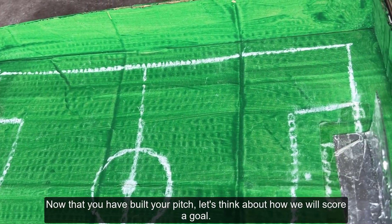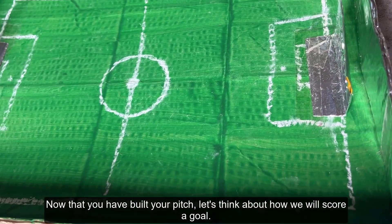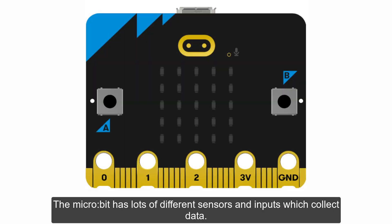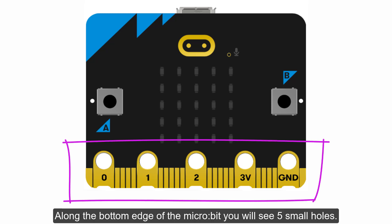Make sure that the goal and the back wall are close together but not touching. Now that you have built your pitch, let's think about how we will score a goal. The microbit has lots of different sensors and inputs which collect data.